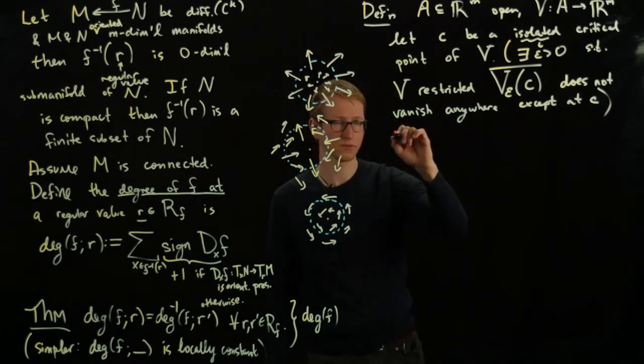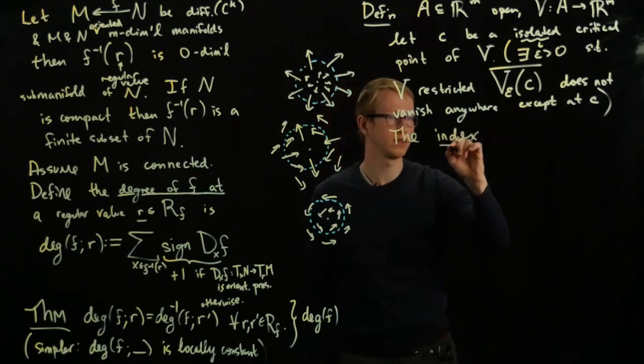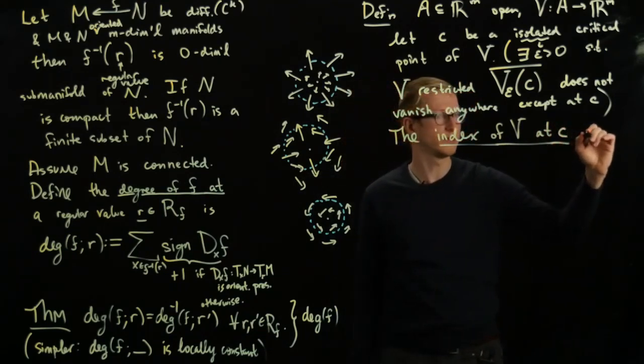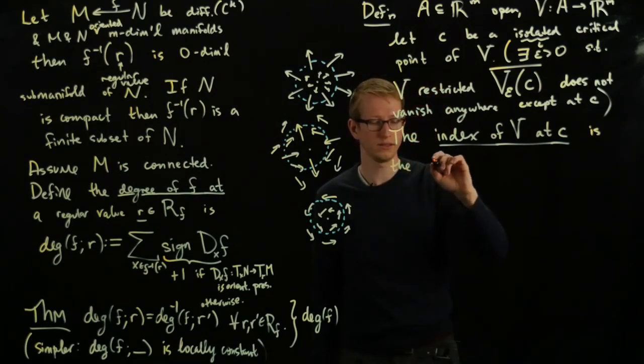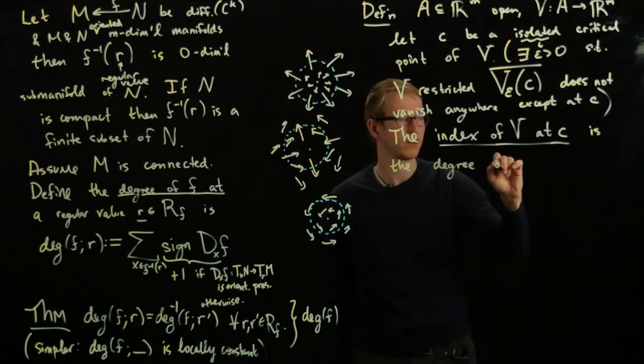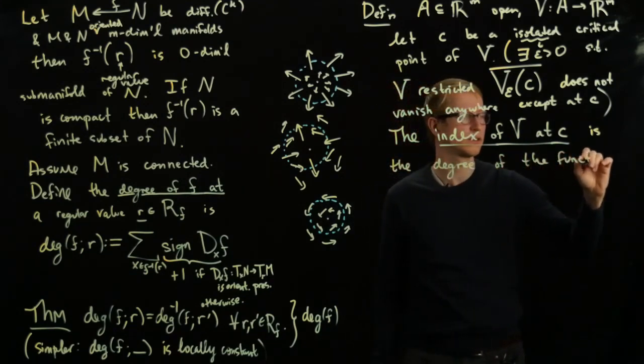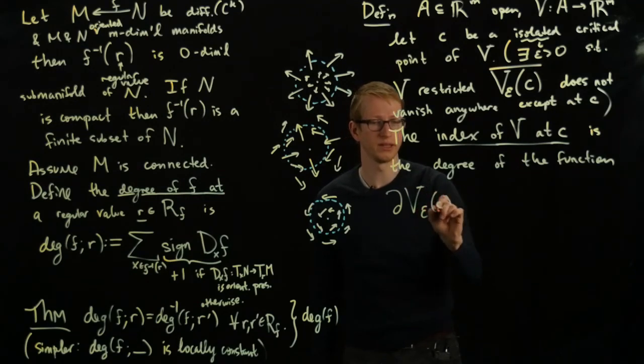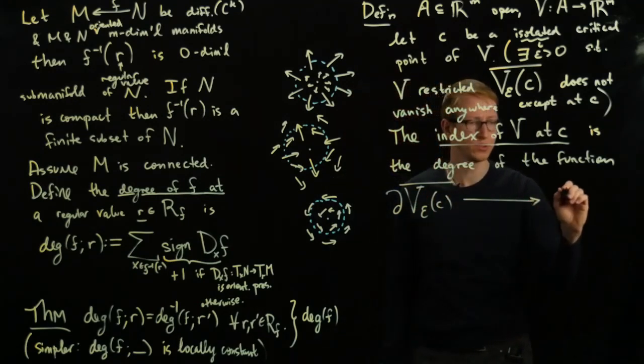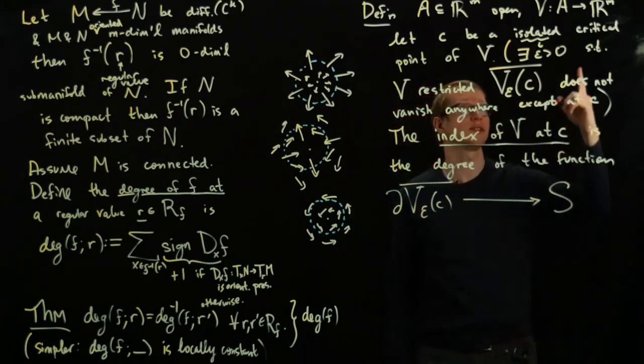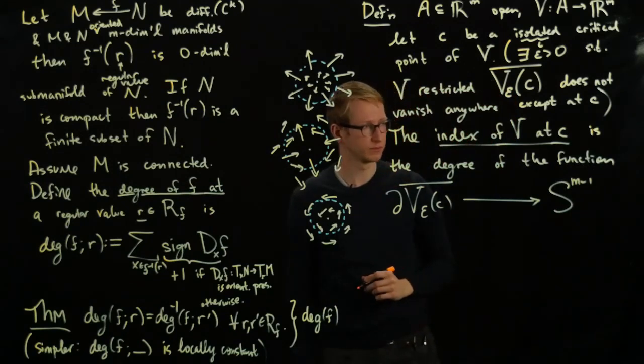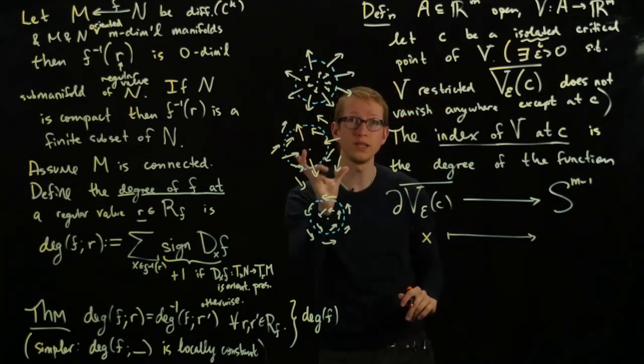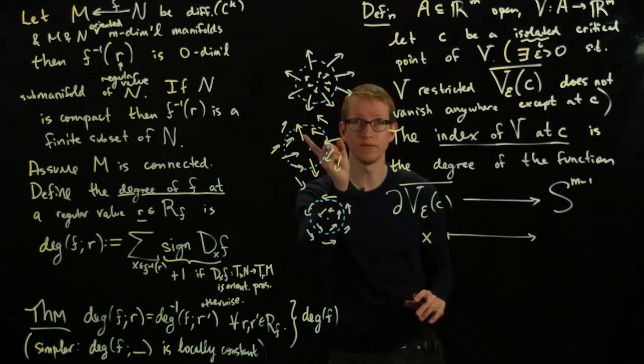So what we can do is define the index of V at C. And this is the degree of the function which is defined on the boundary of this epsilon neighborhood. And it maps to a sphere of the same dimension. In this case, it's an M-1 dimensional sphere. And what it assigns is to every point x, it takes the vector field at that point and rescales it so that we know that it doesn't vanish. And when you rescale it, we just make sure that it lies on the unit sphere.